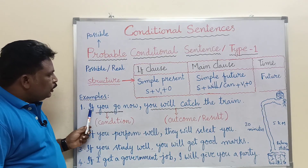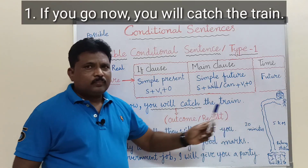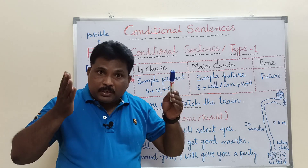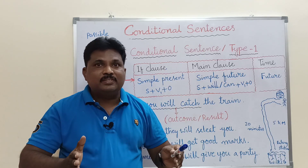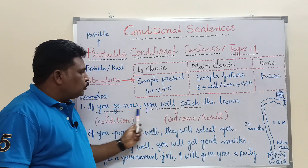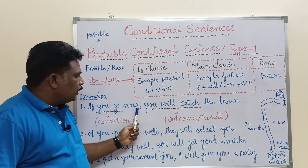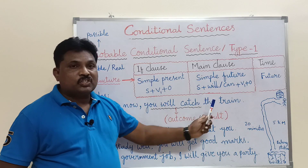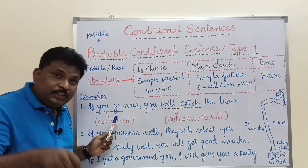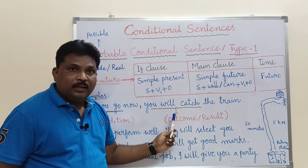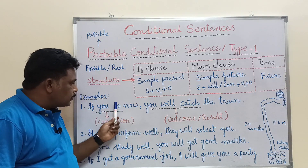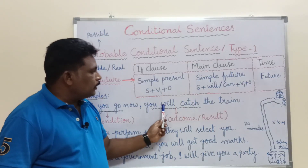Look at the example: 'If you go now, you will catch the train.' We focus on the meaning. Generally the subordinating clause and main clause are separated by a comma. When you write the main clause first and subordinate clause next, there is no need for a comma. In the if-clause, a condition is introduced; in the main clause, the outcome or result of that condition is seen.